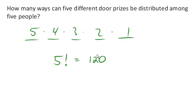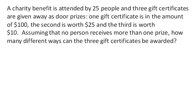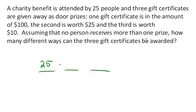Now let's look at a slightly different one. A charity event is attended by 25 people, and we're going to give away three different prizes — no person receives more than one prize. How many different ways can we distribute these? We have three prizes, and order matters because it matters who gets the $100 prize versus the $25 prize. There are 25 possibilities for the first prize, 24 for the second, and 23 for the last, giving us 13,800 different ways these prizes could be awarded.